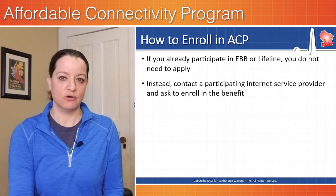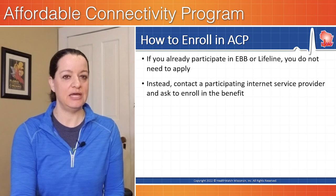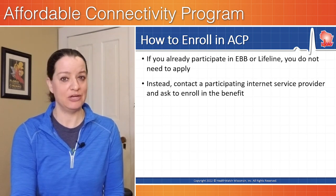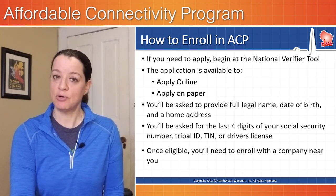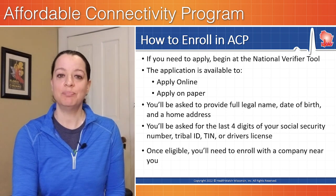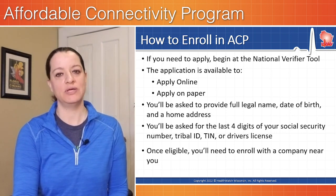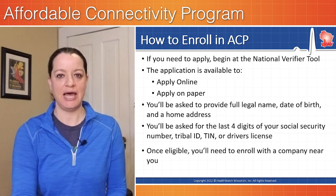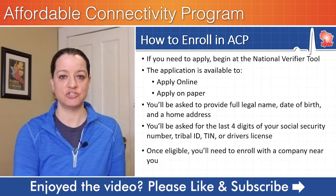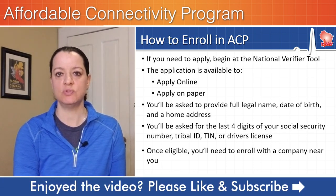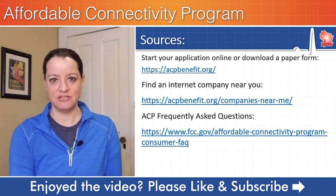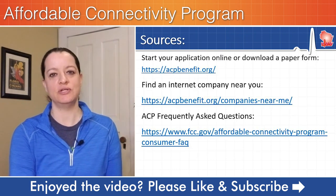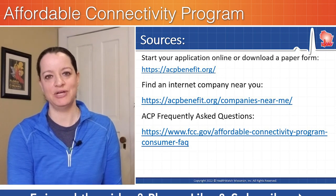To enroll in the Affordable Connectivity Program, if you participate in Emergency Broadband or Lifeline, you can just contact your Internet service provider directly. If you do not participate in those programs, you can apply online or on paper. We link in the description below to how to get an application started. You're going to use the National Verifier tool — the same tool people use to apply for the Lifeline benefit. We also link to a resource of how to find an Internet company close to you.